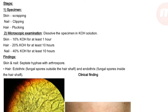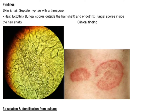Findings: in skin and nail, we get septate hyphae with arthrospores. In hair, we find exothrix and endothrix — exothrix means fungal spores outside the hair shaft, endothrix means inside. The below figure shows septate hyphae with arthrospores. Clinically, tinea appears as ringworm, and the sample is taken from the periphery — not the center — as the fungus is more present at the periphery.